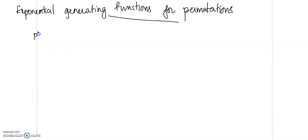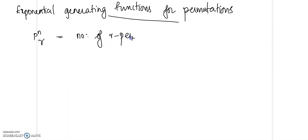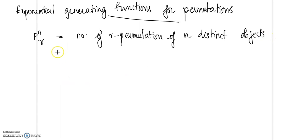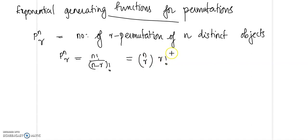We have defined P(n,r) as the number of permutations of n different objects taken r at a time. P(n,r) equals n factorial divided by (n minus r) factorial, which is also equal to nCr times r factorial.